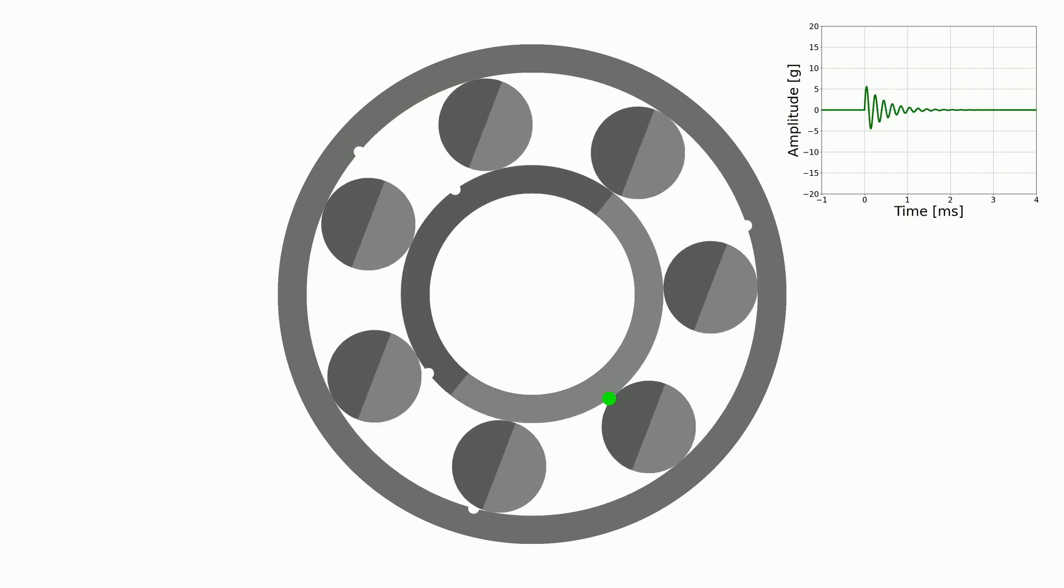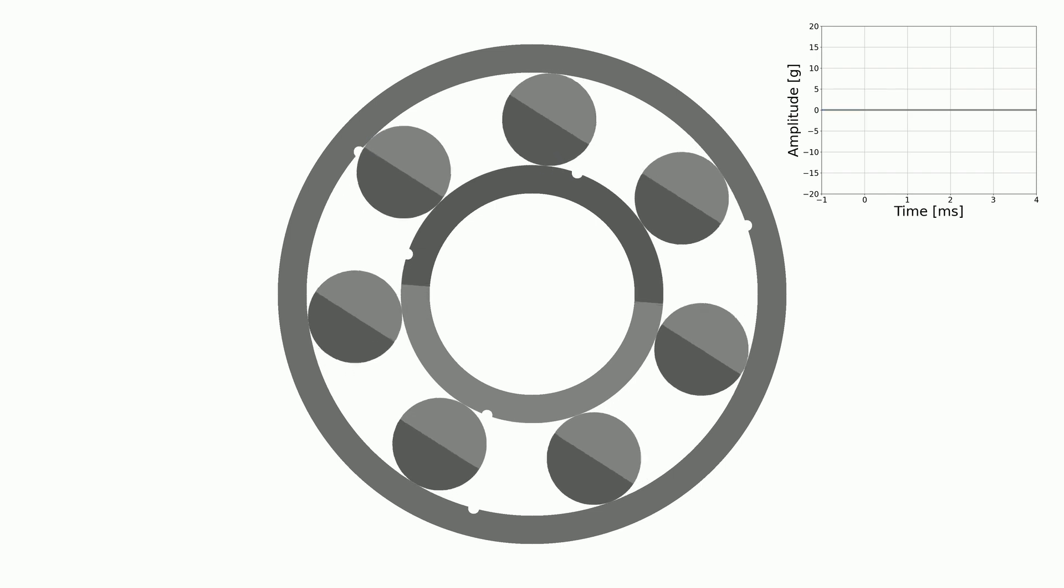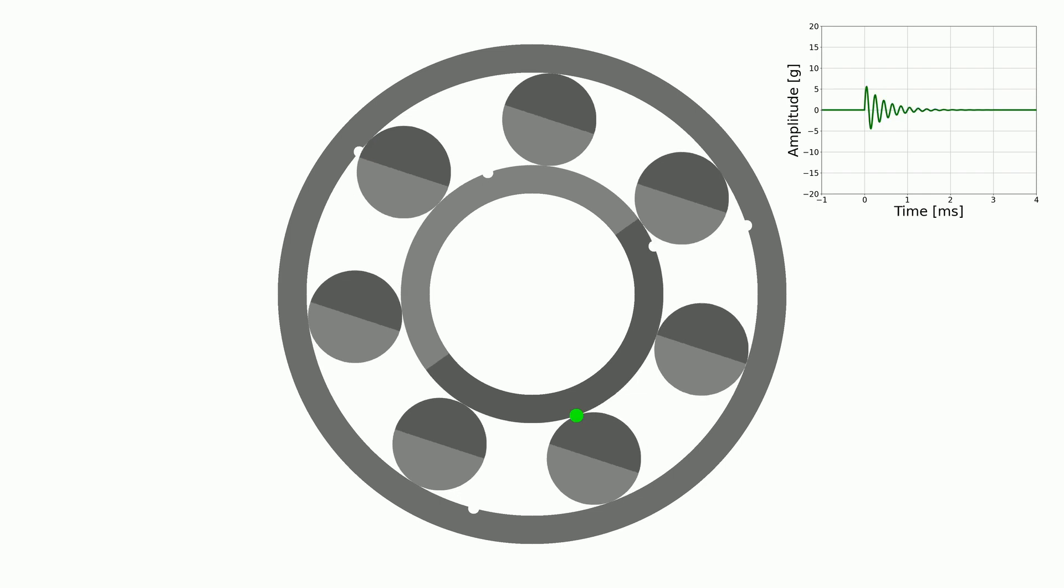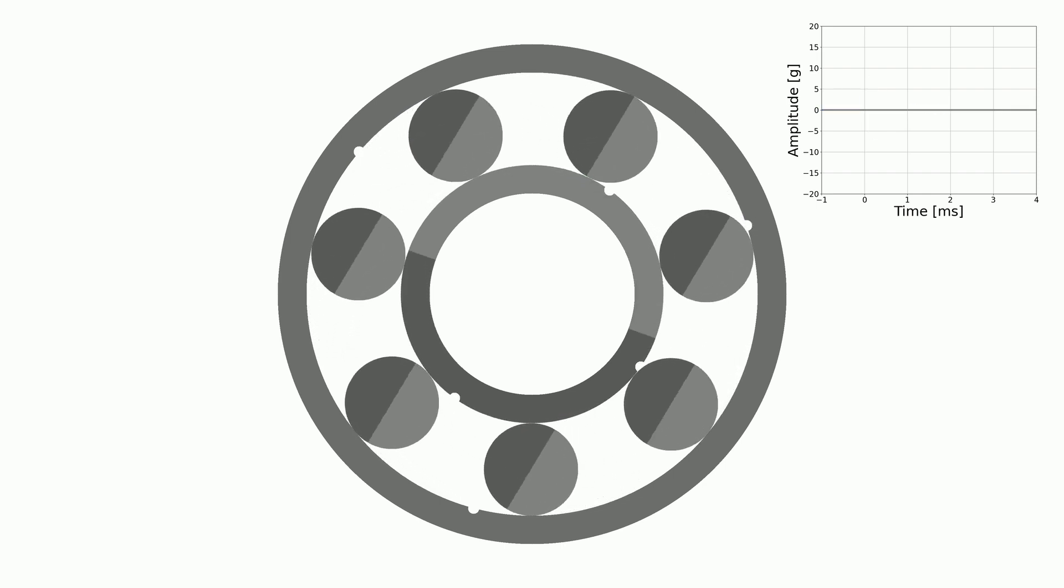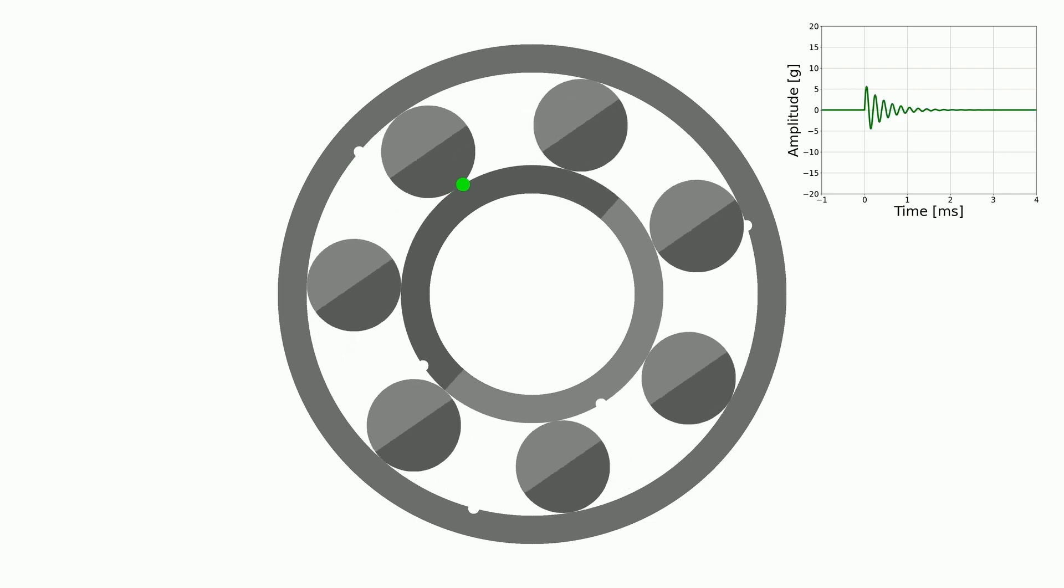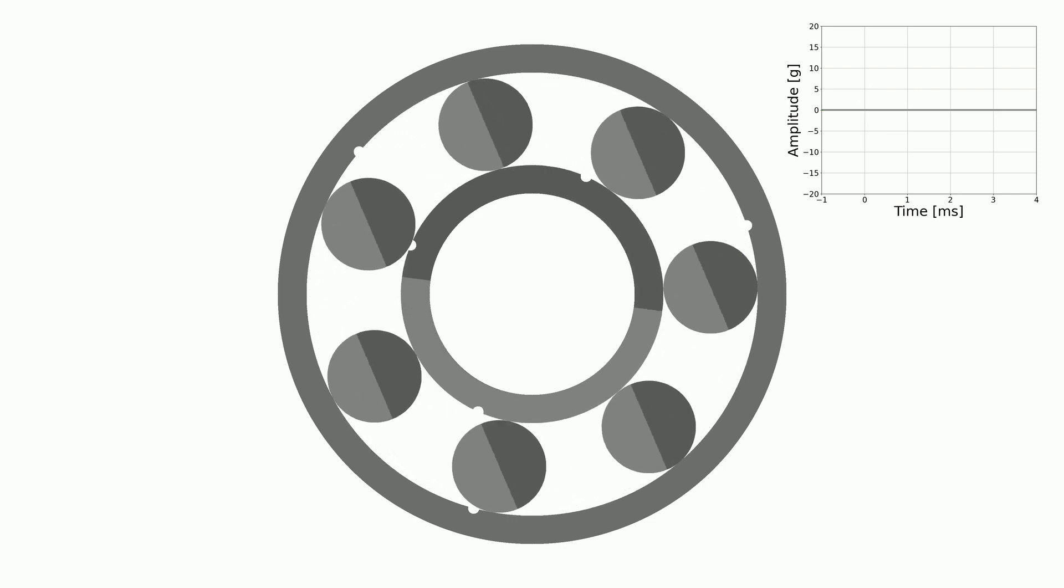The outer race is stationary. Each time a ball passes a fault on the inner race or the outer race, it generates a shock. For introduction, we will first show you examples without modulation.